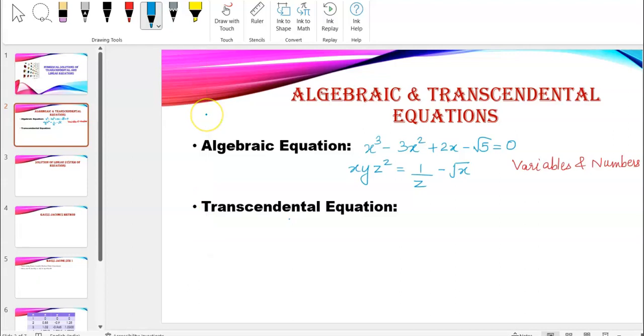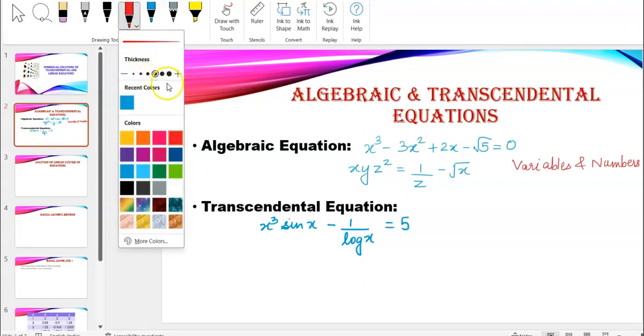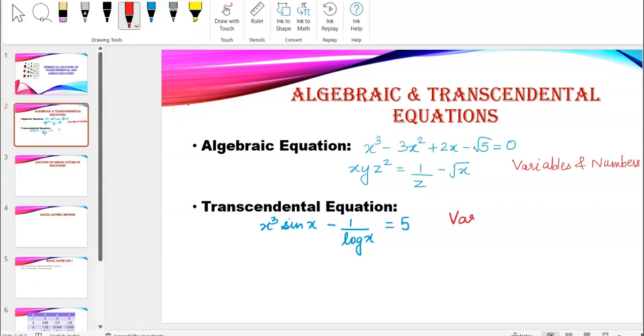And if I talk about transcendental equations now, I'll have say x cube sin x minus 1 upon log x equal to 5. So what's the difference here? As I can observe, we don't really have just variables and numbers. We also have special functions like exponential, logarithm, cosine, tan, things like that.